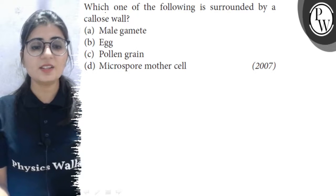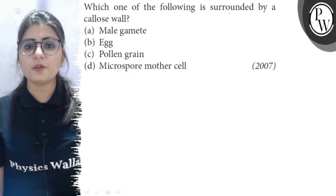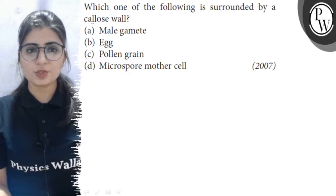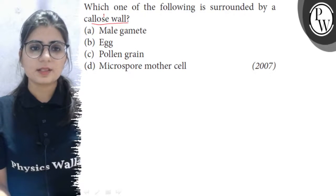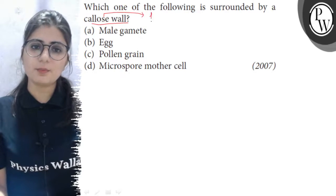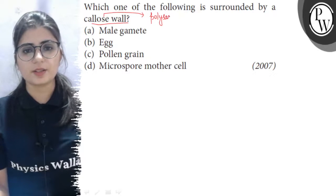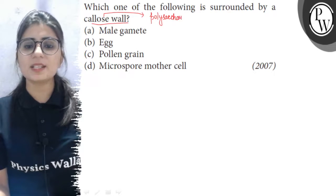Hello, let's see the question. Which one of the following is surrounded by a callose wall? Callose is a chemical. It is a polysaccharide. It means it is a carbohydrate. So, callose is a polysaccharide.